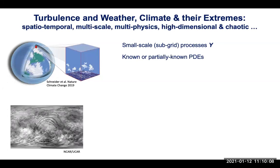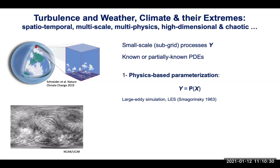In turbulent flow or climate weather models, the subgrid scale processes y — the intermediate small scale processes — cannot be resolved by the available grid resolution. So what people do, common to both the turbulence and climate dynamics communities, is something called parameterization. Since they cannot resolve y, they assume y is some function of the large scale variables x. For example, the subgrid scale forcing in a turbulence model is assumed to be a function of the mean flow variables.